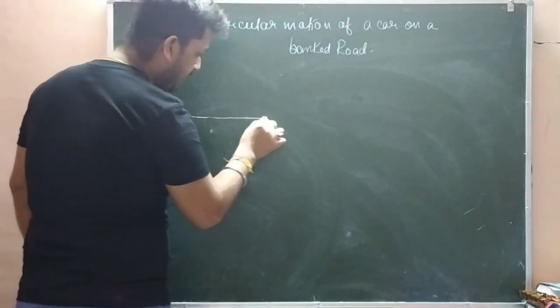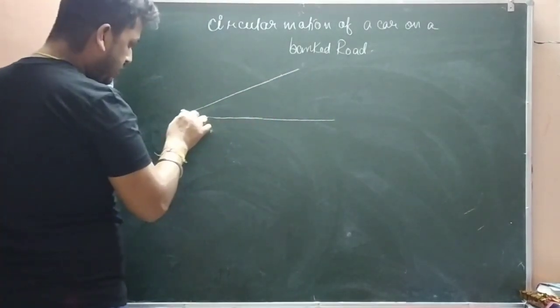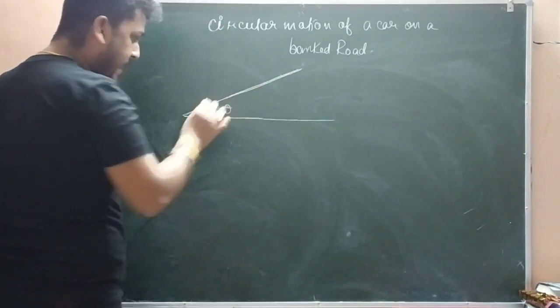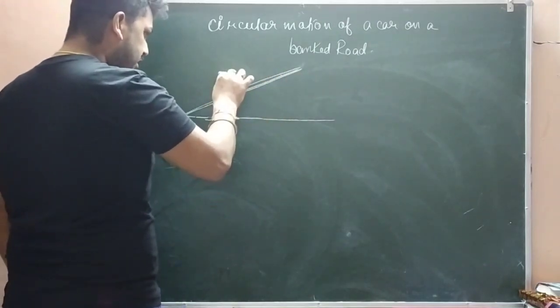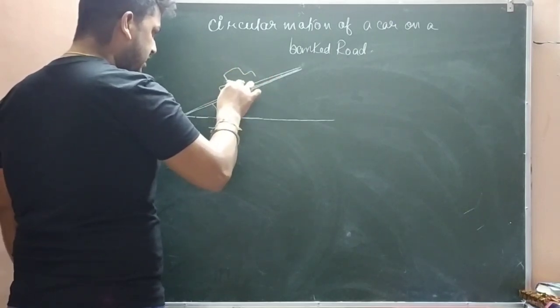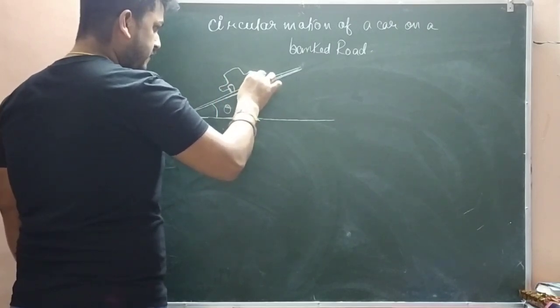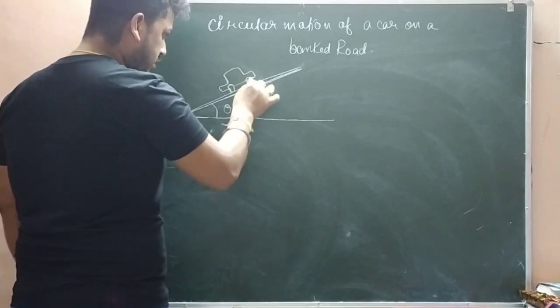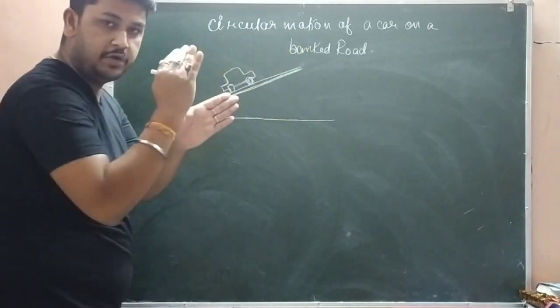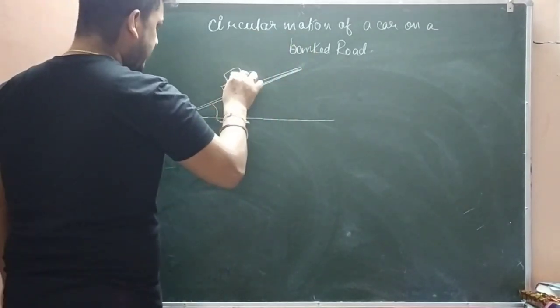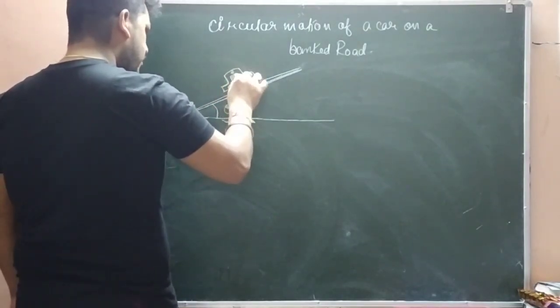So we will make a diagram. We will make a horizontal surface and the road is at an angle theta bank. We will make an angle theta, and here is a car. This is the front side.